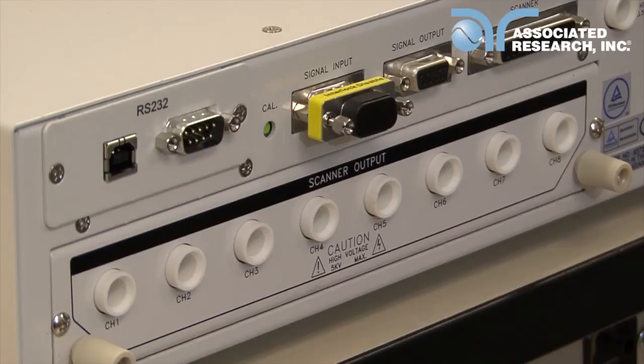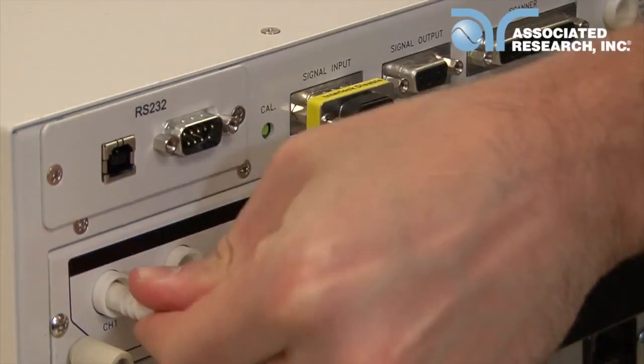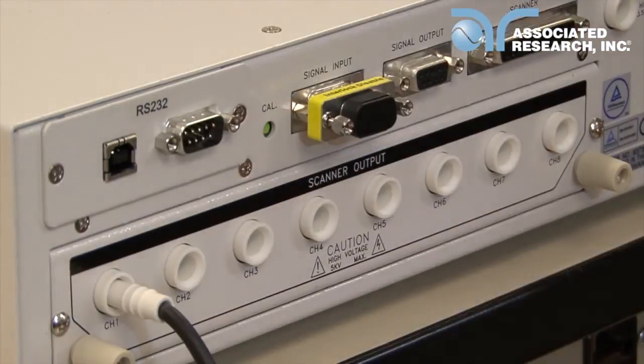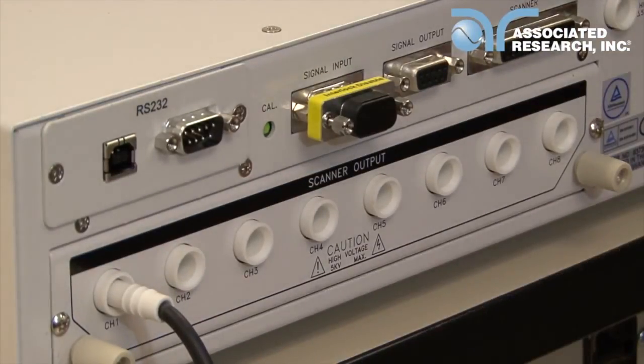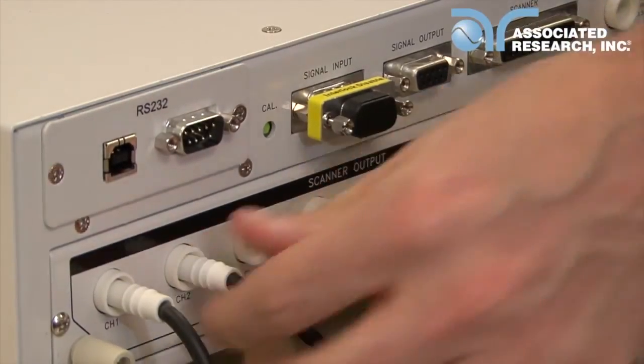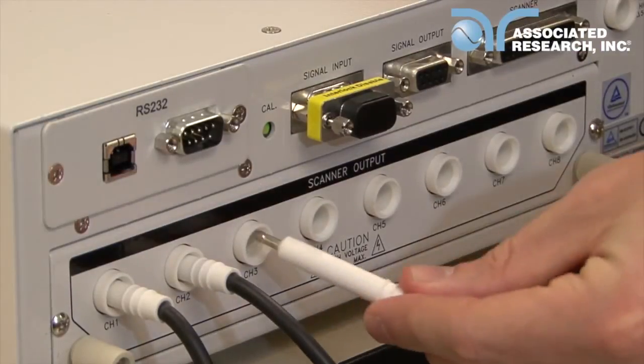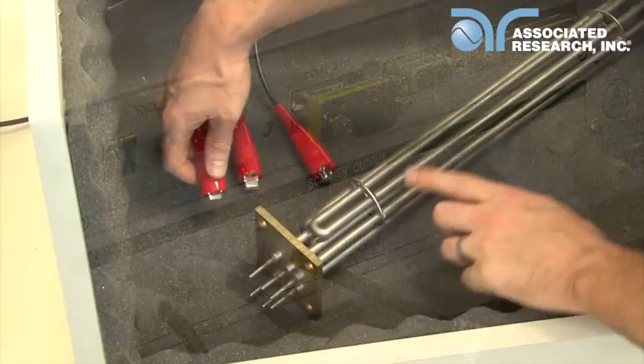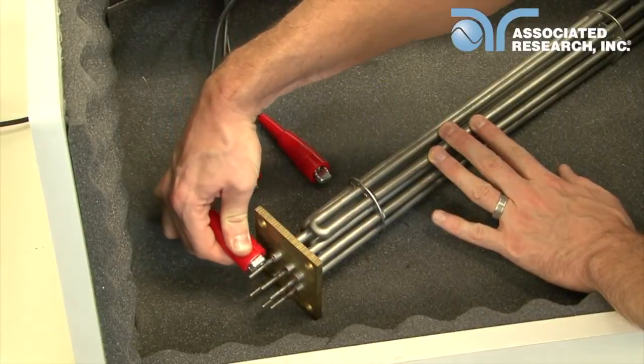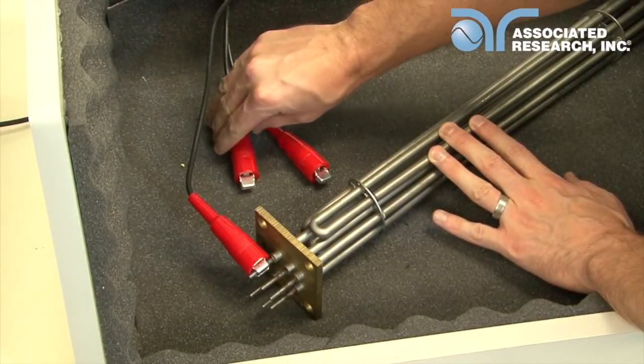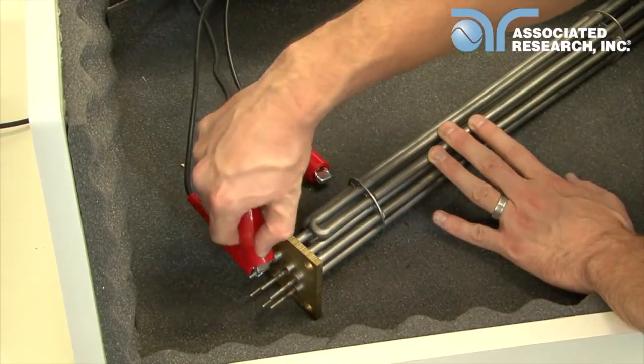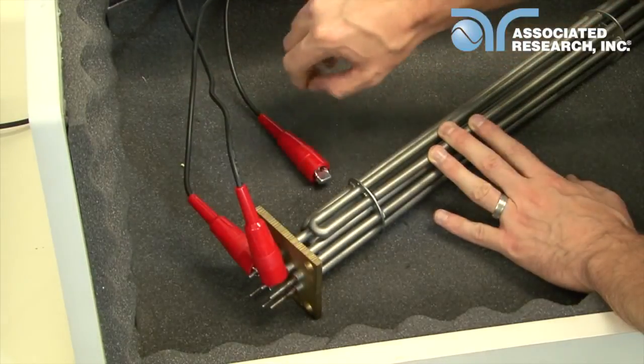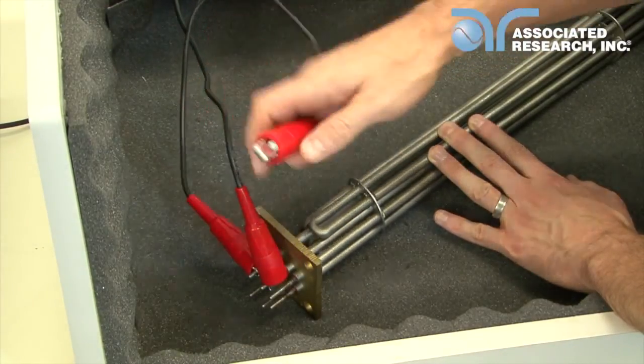First, we'll connect the DUT to the rear port scanner terminals. We've made up three separate high voltage connectors from the supplied high voltage wire and high voltage connectors. Since we're testing three separate points, we're going to connect to channels 1, 2, and 3 on the built-in scanner. To connect to the DUT, connect channel 1 from the scanner to pin 1 on the DUT, connect channel 2 to pin 2 and channel 3 to pin 4.